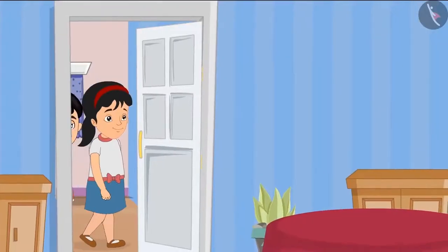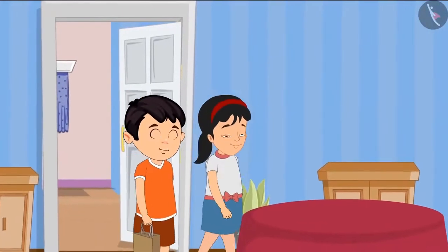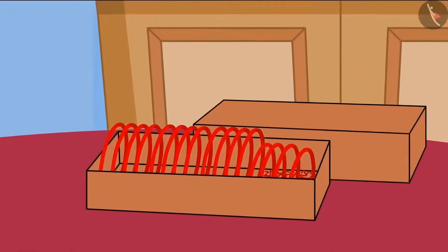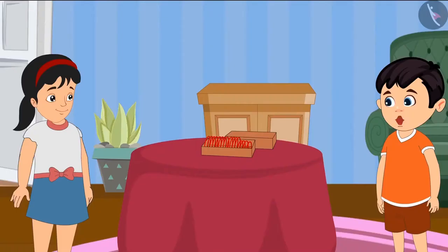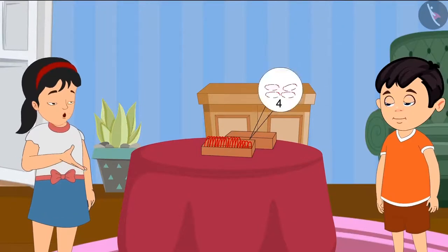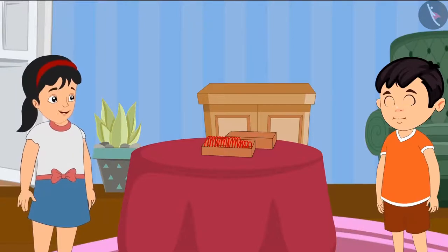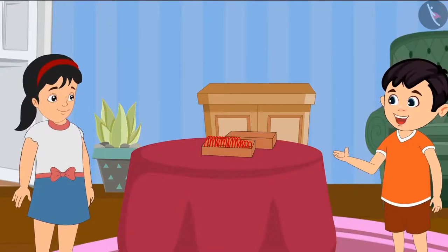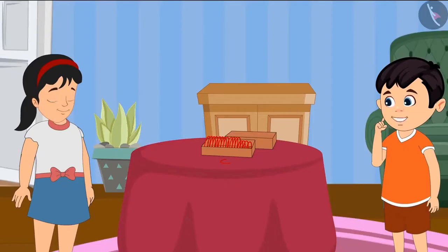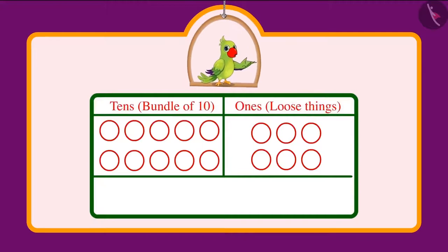Chotu and Aarti go to Chotu's house with the bangles. When they opened the box at the house, they saw four bangles were broken — looks like they broke on the way. Aarti, see what happened, four bangles are broken in the box. Chotu, how many bangles are left? Let's remove the broken bangles one by one and count the remaining. Removed one from 16 bangles, now we are left with six bangles. Hey, but it looks like we have more than six! Hey Chotu, you are counting it wrong.